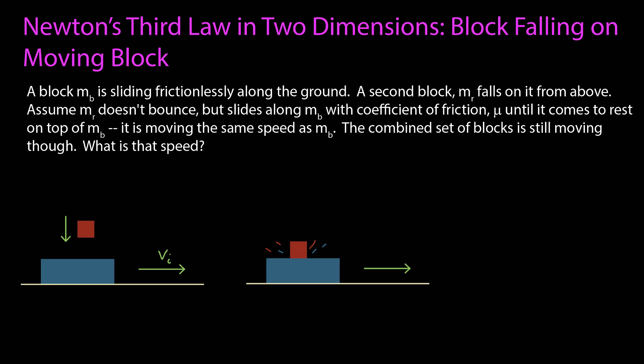When it hits, it doesn't bounce, but it's sliding with friction along the blue block until it comes to rest relative to the blue block. At that time, both are moving with the same speed in the same direction, but it's going to be different than the initial speed that blue had. The question is, what is that speed?